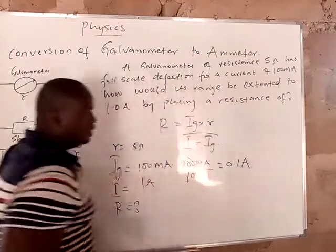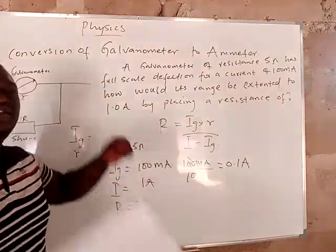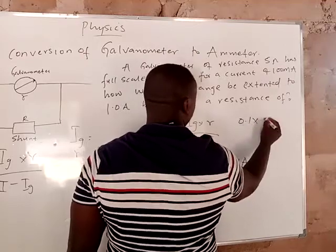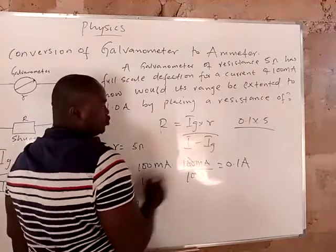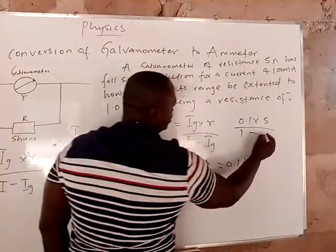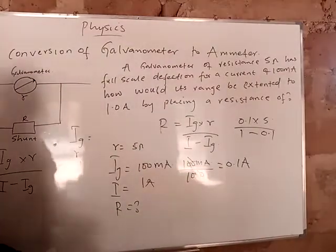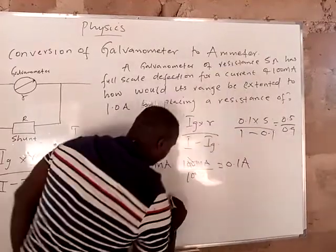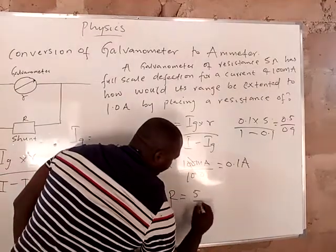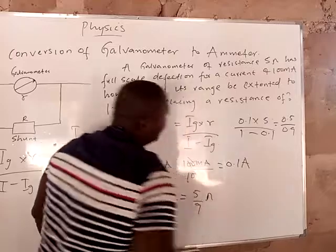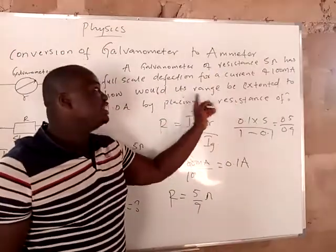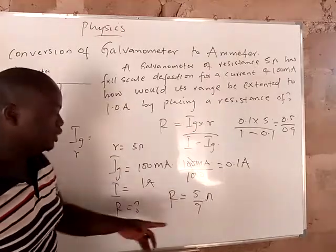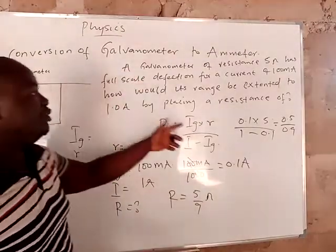Now insert into the formula: R equals 0.1 times 5, all over 1 minus 0.1. This gives you 0.5 divided by 0.9, which equals 5 over 9 ohms. So you need a resistance of 5/9 ohms connected in parallel to convert this galvanometer to an ammeter.